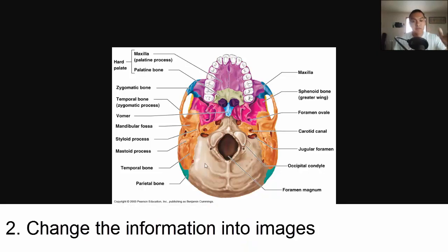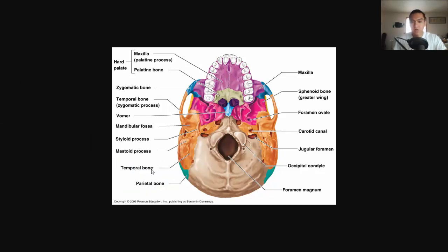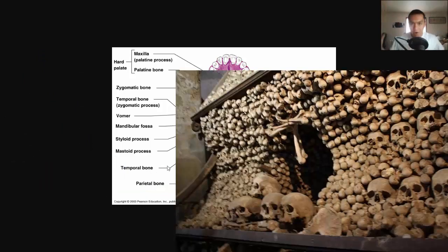Then you're going to have to change all of the names for the different parts into images. For example, maxilla would be Godzilla, temporal bone would be a temple made of bones. You get the idea, right?